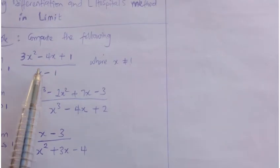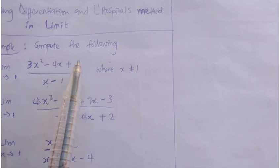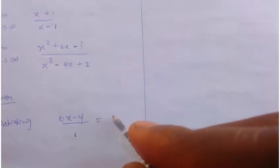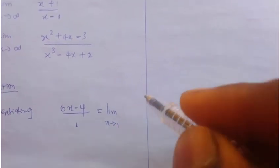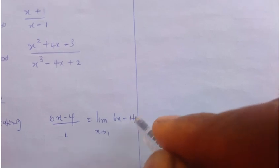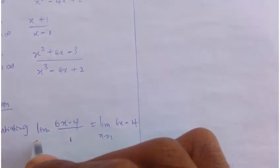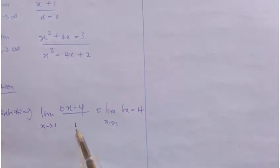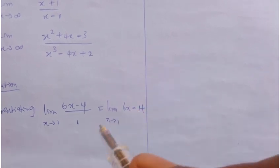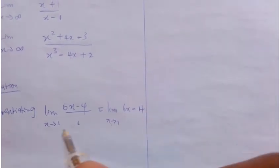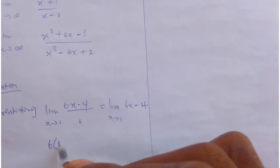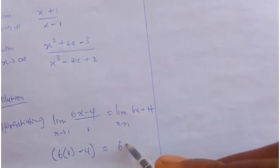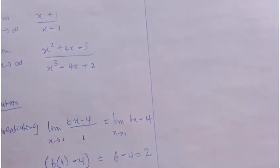Why? Because the differential of x is 1, the differential of 3x² is 6x, the differential of 4x is 4, and the differential of a constant is 0. So this becomes the limit as x tends to 1 of (6x - 4). Now, putting our x value: 6 times 1 minus 4 equals 6 minus 4, which equals 2.